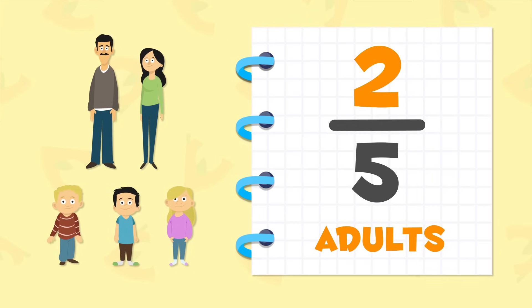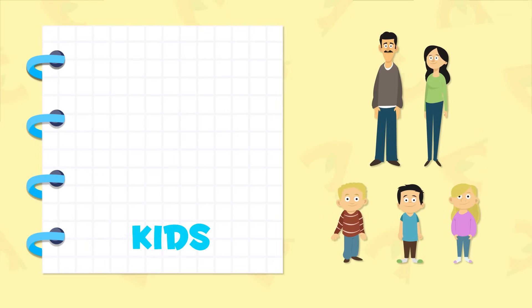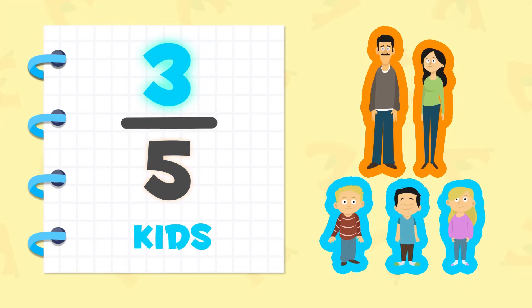Exactly! So, what fraction would represent the number of kids in our family? Hmm, three-fifths! In this group of five, three people are kids.